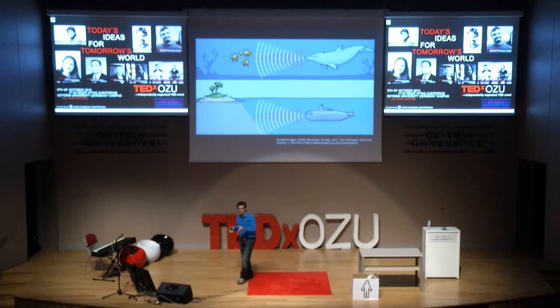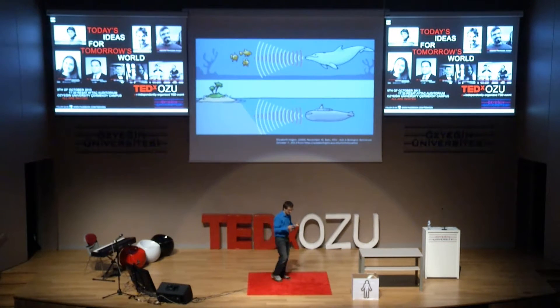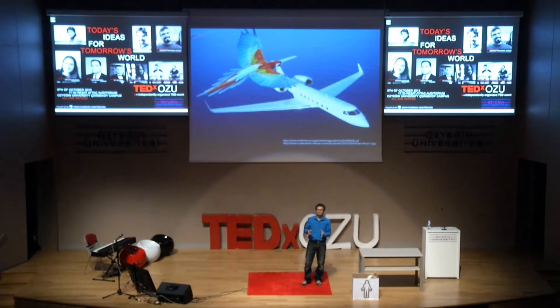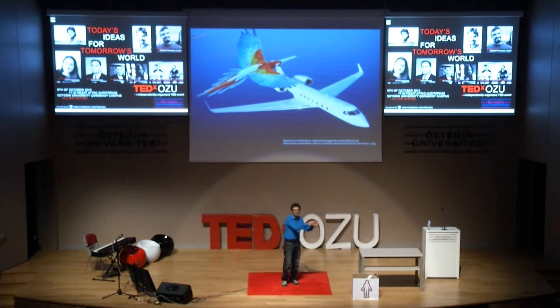Here is one example: you can see the wheels and sonar ability — we put sonar from whales into submarines to help us see underwater objects. This is another example: the Wright brothers invented the plane, and they saw birds and learned how to fly. It begins like this.